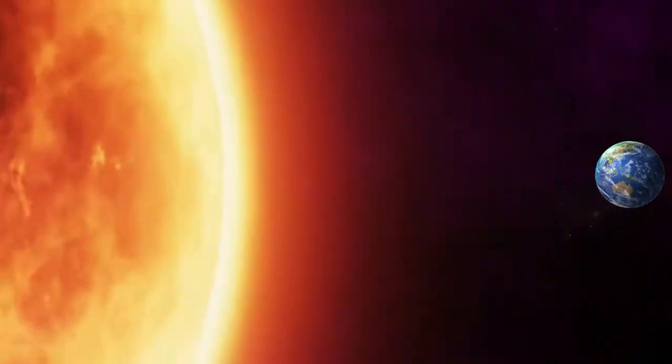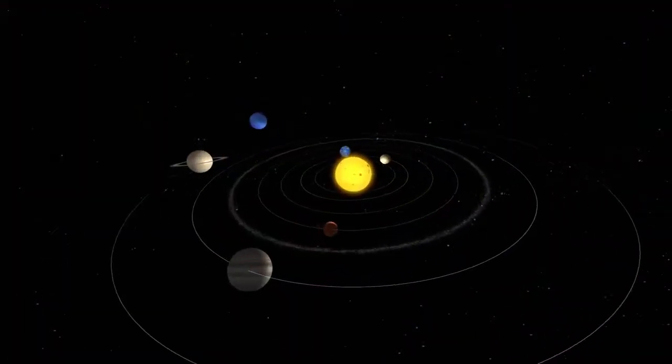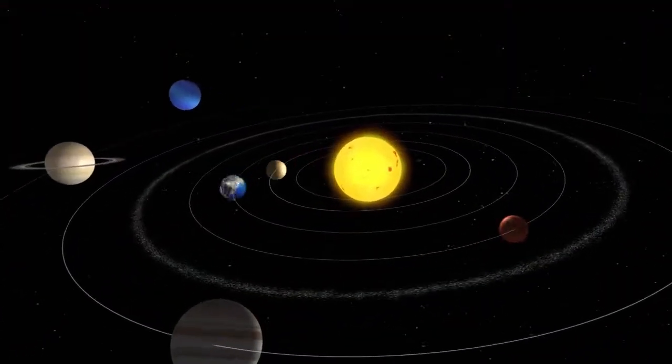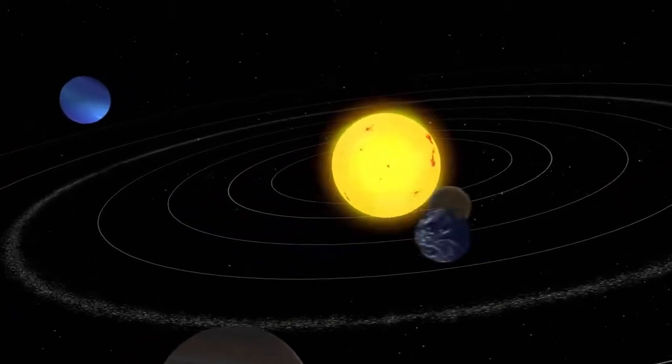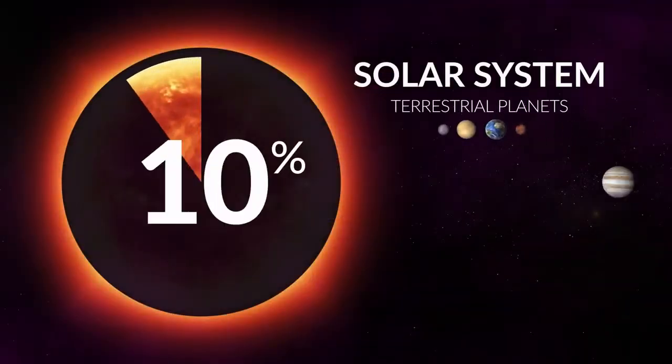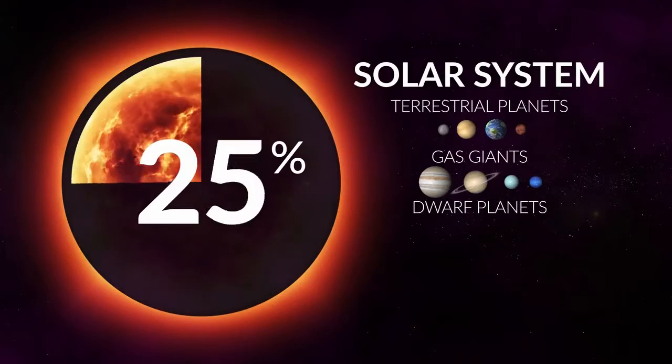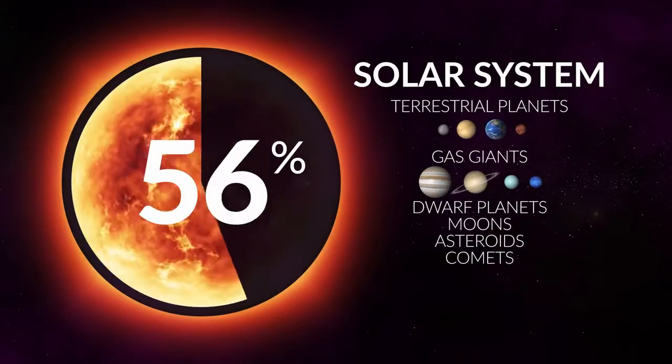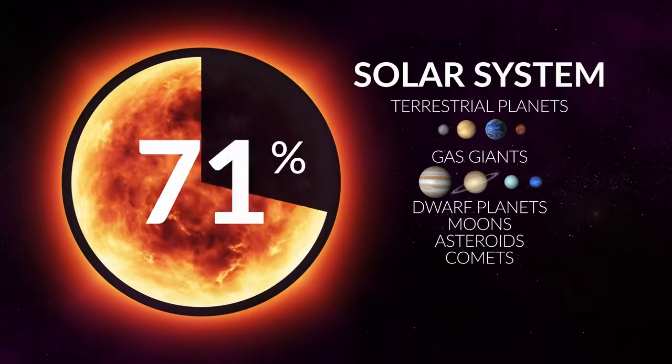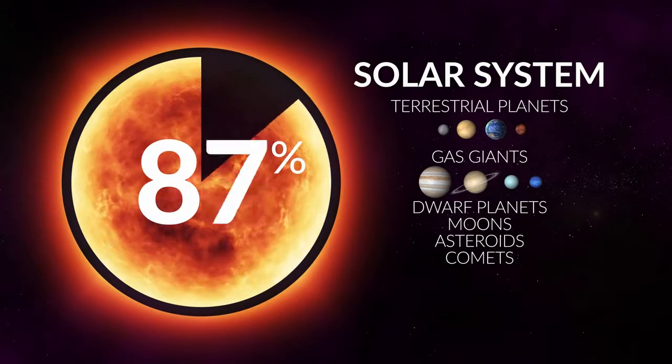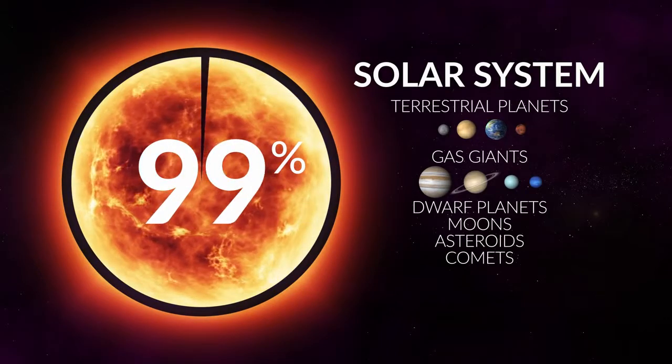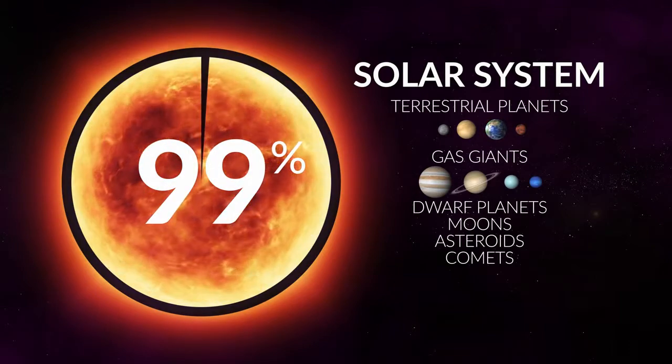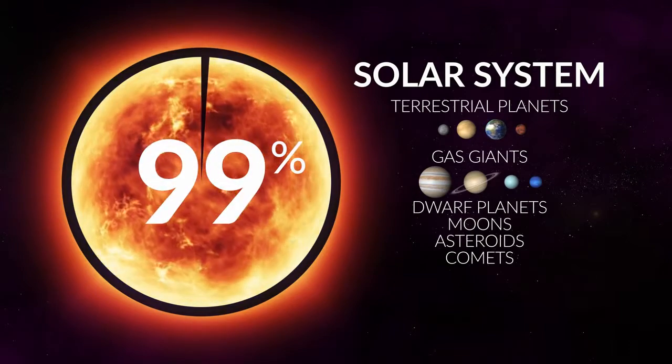The Sun is also a massive object. If you were to add together all of the mass for every object in our solar system—the terrestrial planets, the gas giants, the dwarf planets, all of their moons, the asteroids, the comets—the Sun by itself would still be far more massive. In fact, the Sun contains 99.866% of all the mass in our solar system.